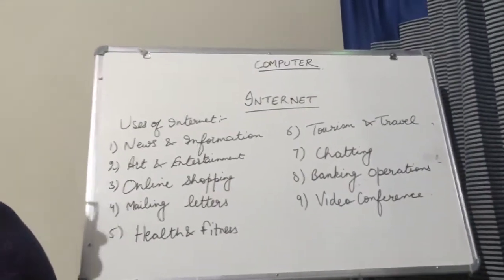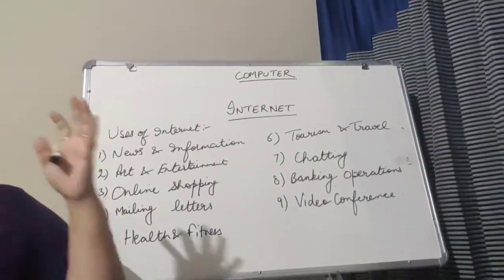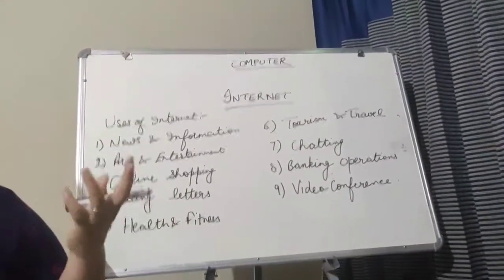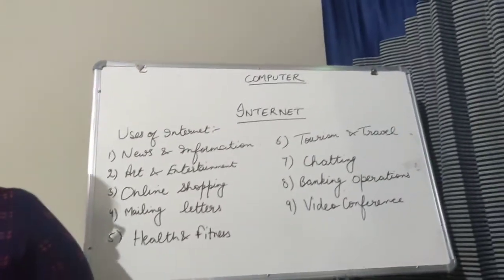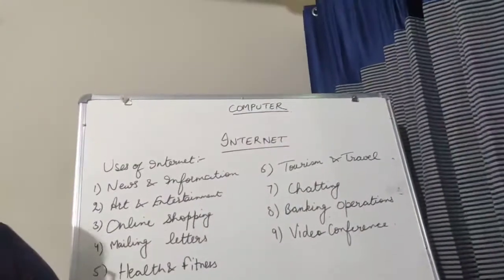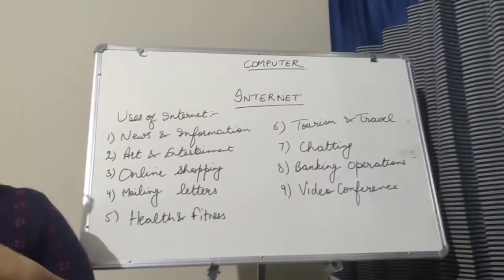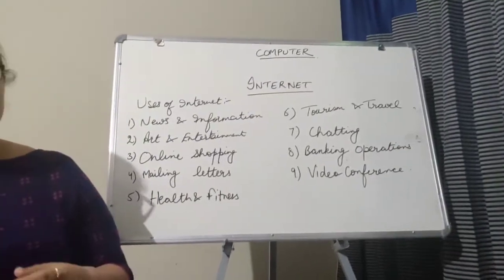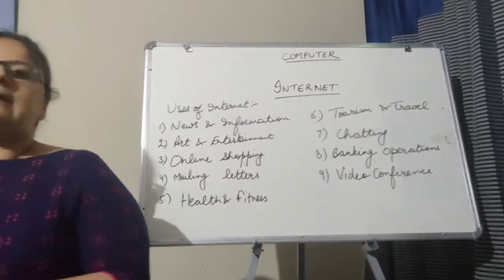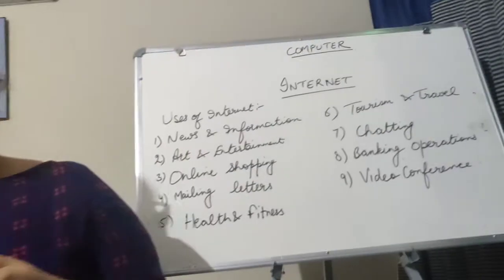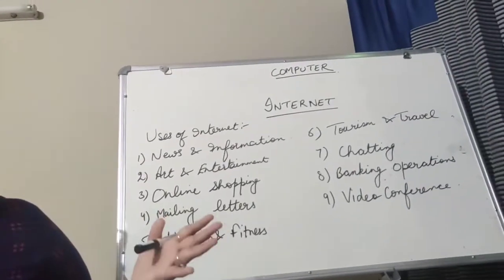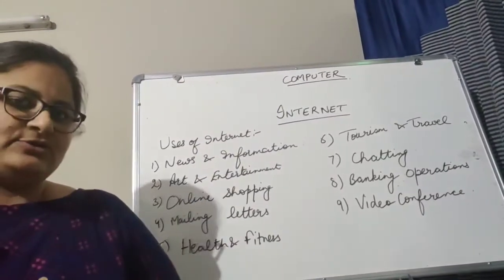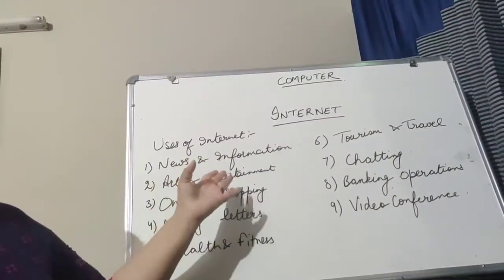So these are the some uses of internet. Iske alawa bhi there are many more. You can search for them. You can think for them. Some creative you can think. Aur hum kaha internet use kar sakti hai. For example, aap internet ka use apni education ke liye kar sakti ho. You can get some related videos to anything, means which you are studying. Aap usse related videos search kar sakti ho. So this is how you are using it in education. Think more creative about it ki aap internet ka use aur kaha kaha kar sakti ho. So these are the uses of internet.